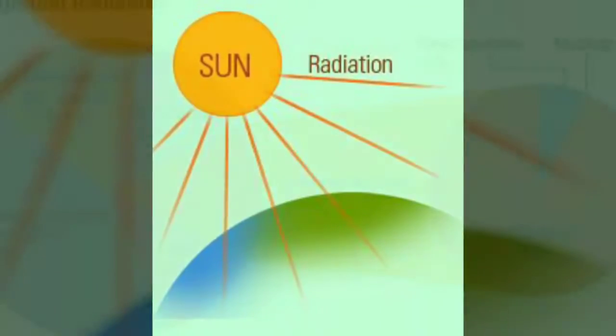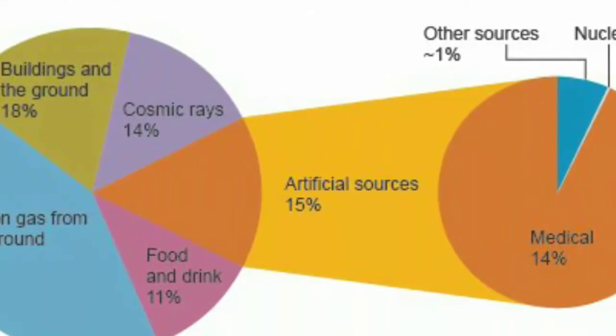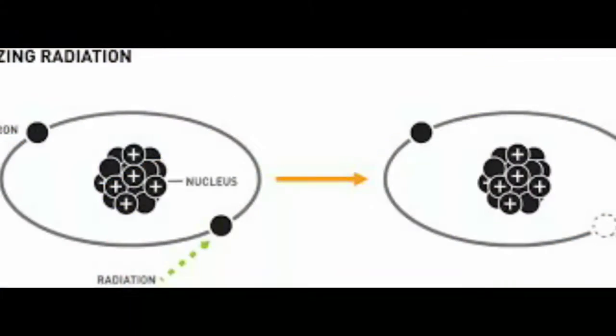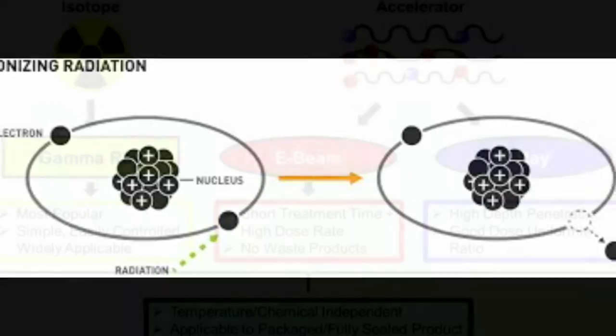gravitational radiation, radiation that takes the form of gravitational waves or ripples in the curvature of space or time. Radiation is often